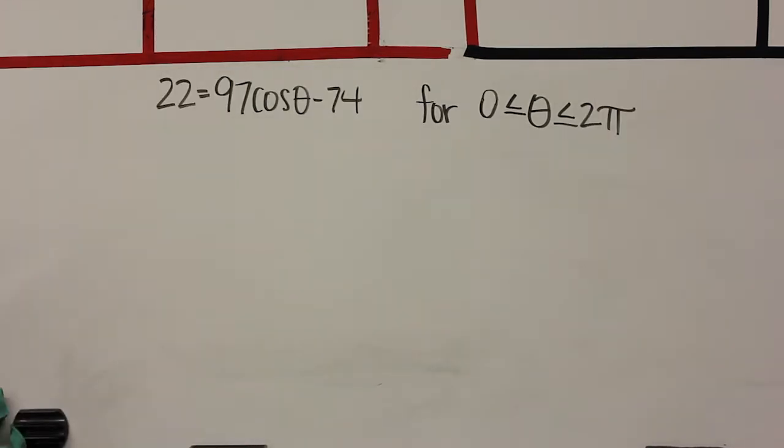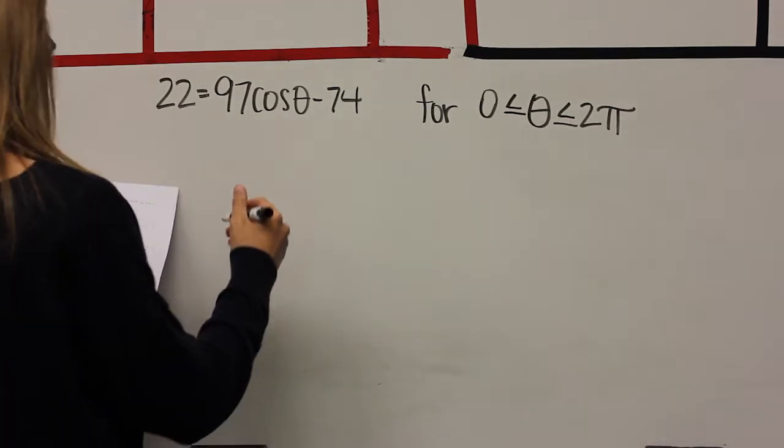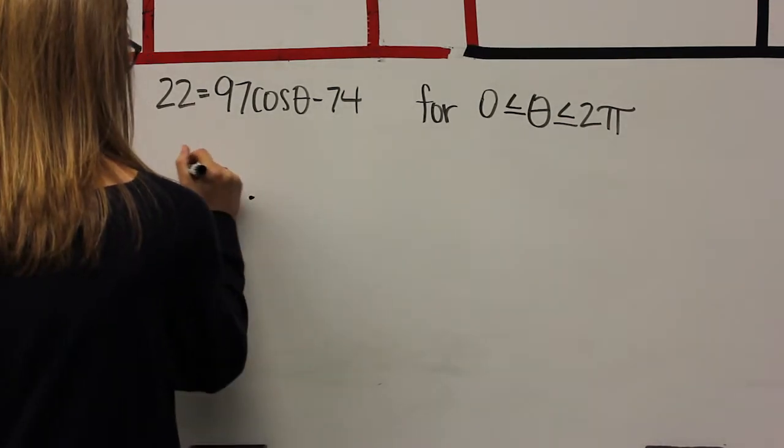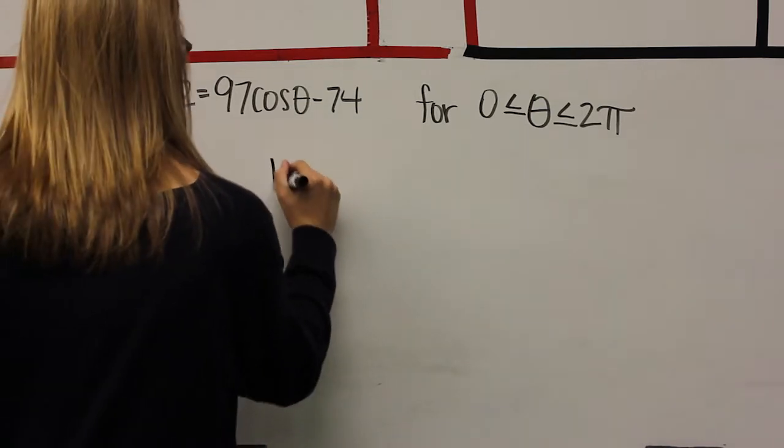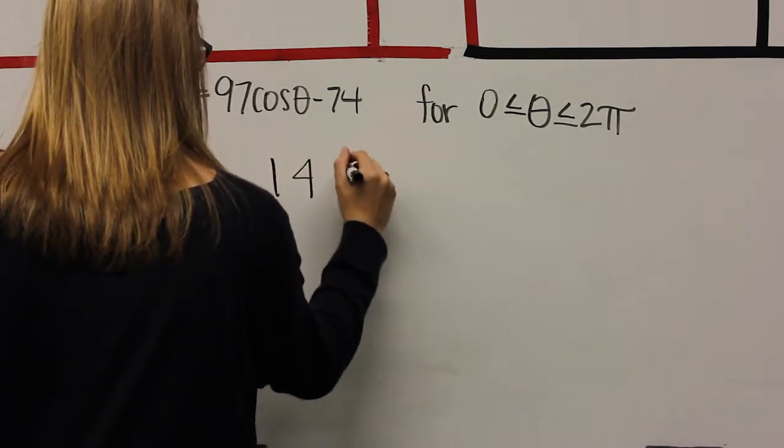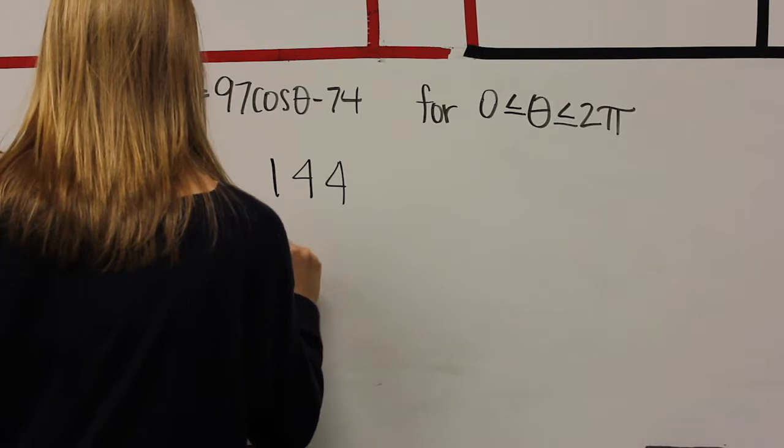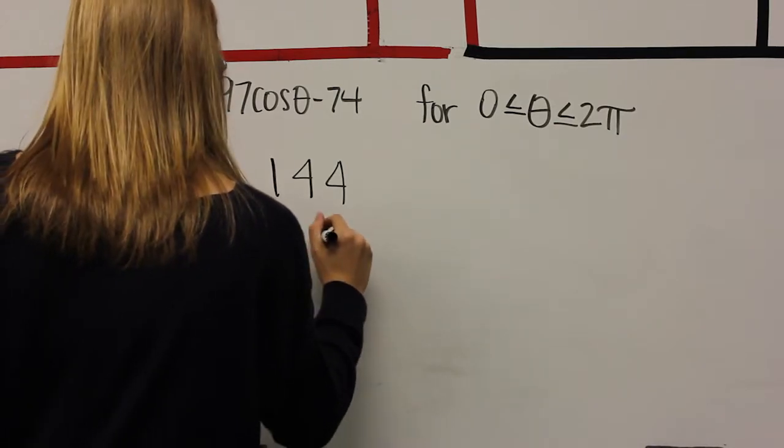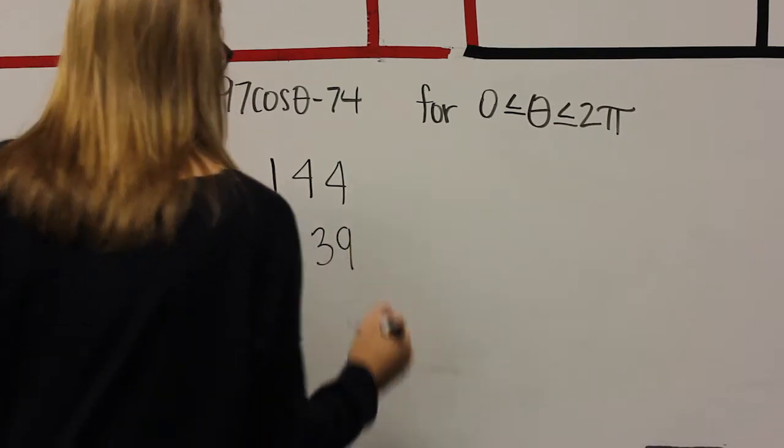For problem E, don't forget to isolate cosine and make sure your answer is within the correct domain restriction, which is 0 to 2 pi. Pause the video and we'll tell you the answer after you're done working. Your answers should be 0.144 and 6.139.